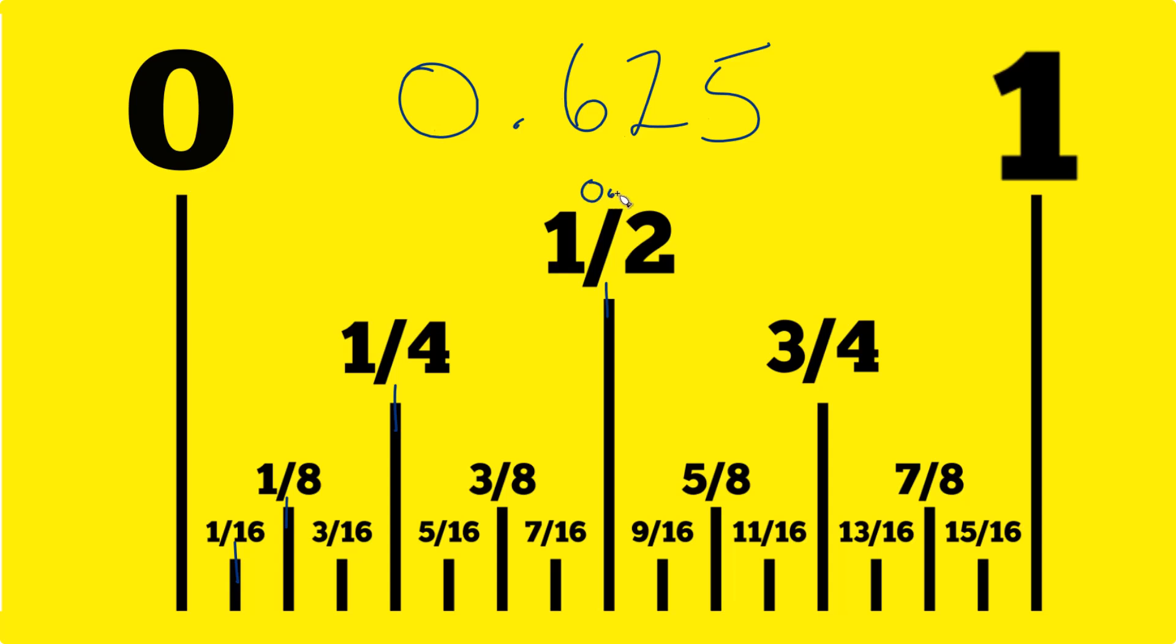One half is 0.5, so it's going to be greater than that. Three fourths is 0.75, so it's going to be less than that. I can tell you right now, 0.625 is equal to five eighths, so it's right here on our ruler.